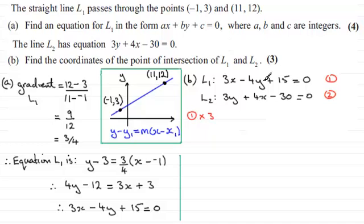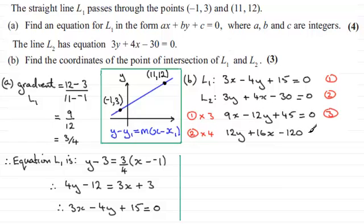And that's going to give us 9x, minus 12y. And we've got 15 times 3, well that's plus 45, and that equals 0. I'll call that equation 3. And I'm going to multiply equation 2 by 4. And if we do that, we end up with 12y plus 16x. And 4 times -30 is going to be -120. And that equals 0. So that's my other equation, which I'll number equation 4.